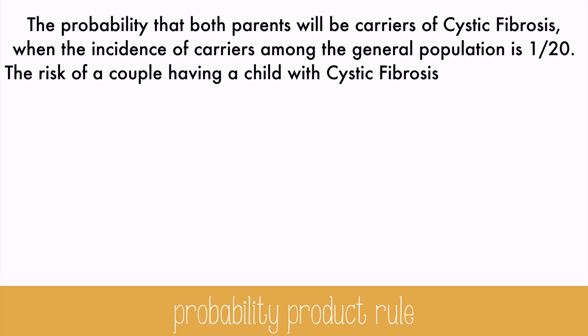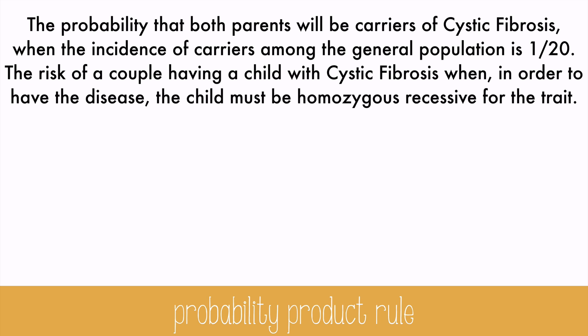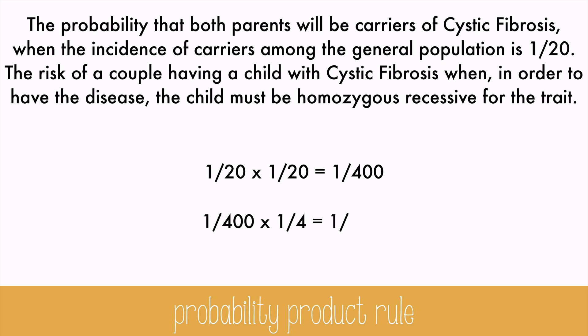Let's try another one. Calculate the probability that both parents will be carriers of cystic fibrosis when the incidence of carriers among the general population is 1 out of 20. Then calculate the risk of a couple having a child with cystic fibrosis when, in order to have the disease, the child must be homozygous recessive for the trait. For the first part, we multiply 1/20 times 1/20 and get 1 out of 400 — the incidence of both parents being carriers. If they are both carriers, a Punnett square shows a one-fourth chance of having a child with the recessive disease. So we multiply 1/400 times 1/4 and get 1 out of 1600. This represents the risk of two people from the general population having a child with cystic fibrosis.